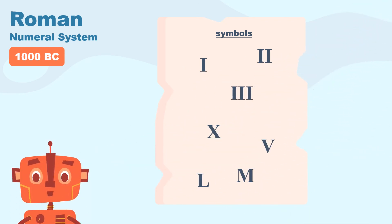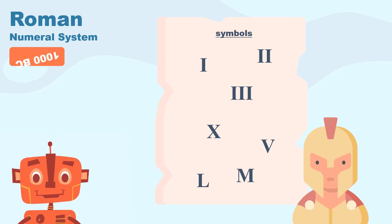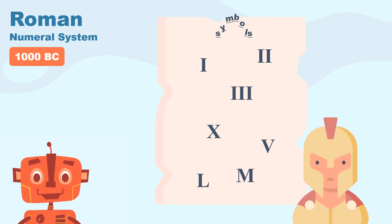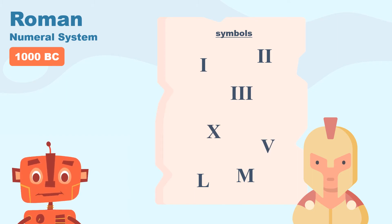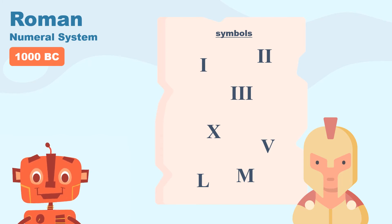The Roman numeral system was created by the Romans around 1000 BC. They used symbols like I, V, and X to represent numbers. Roman numerals can still be seen today. One common place where you can still find them is on some watches and clocks.